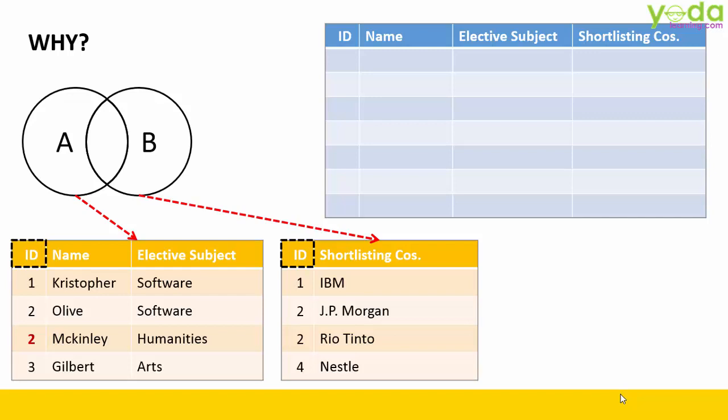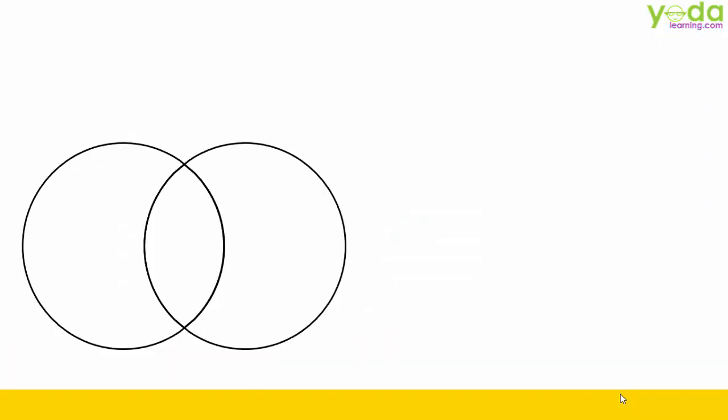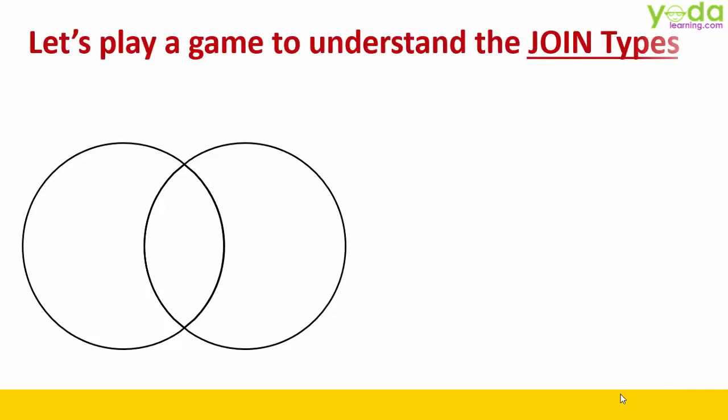But as you graduate to newer applications such as Power BI, Tableau, Alteryx, etc., you would need to know the other variations. Now this video is about beginner level understanding and therefore I will try to take a non-technical way of explaining things. So let's play a game to understand the Joint Types.